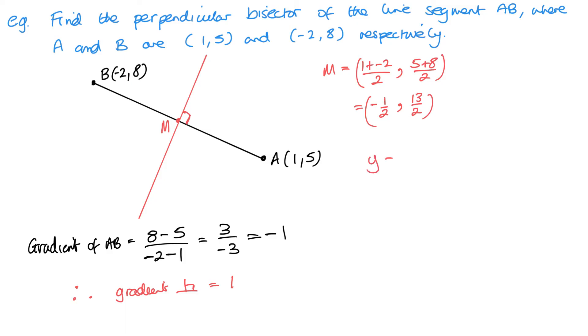Now, I know the midpoint and I know the gradient. I can use the formula from P1. So, y minus y1 equals m(x minus x1). So, y minus 13 over 2 equals 1 lots of x minus minus 1 half. So, that's going to be y minus 13 over 2 equals x plus 1 half.